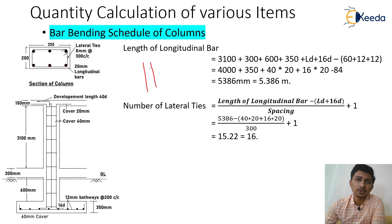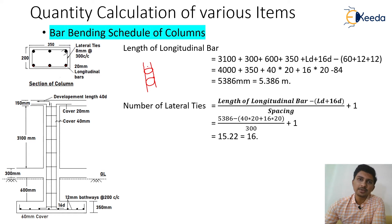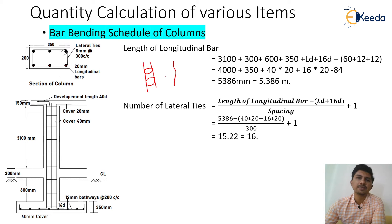Lateral ties are those which keep the vertical reinforcement intact in their places, so they won't bulge or have shear stresses forming due to gravity. Whenever we pour concrete, because of gravity those vertical bars might bulge or compress due to self-weight. Lateral ties tie them together and keep the longitudinal bars in proper position.